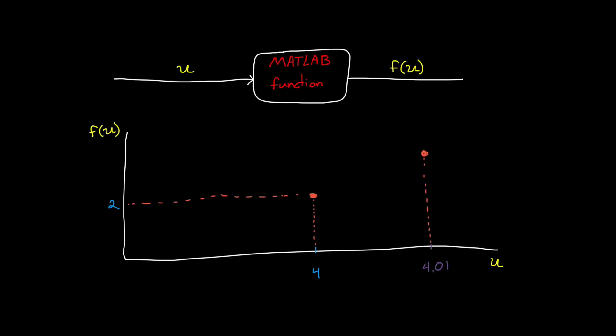To visualize this for the square root function operating around 4, imagine sending through 4.01 and 3.99, and then using the results to calculate a slope. This is a numerical approximation of the Jacobian.